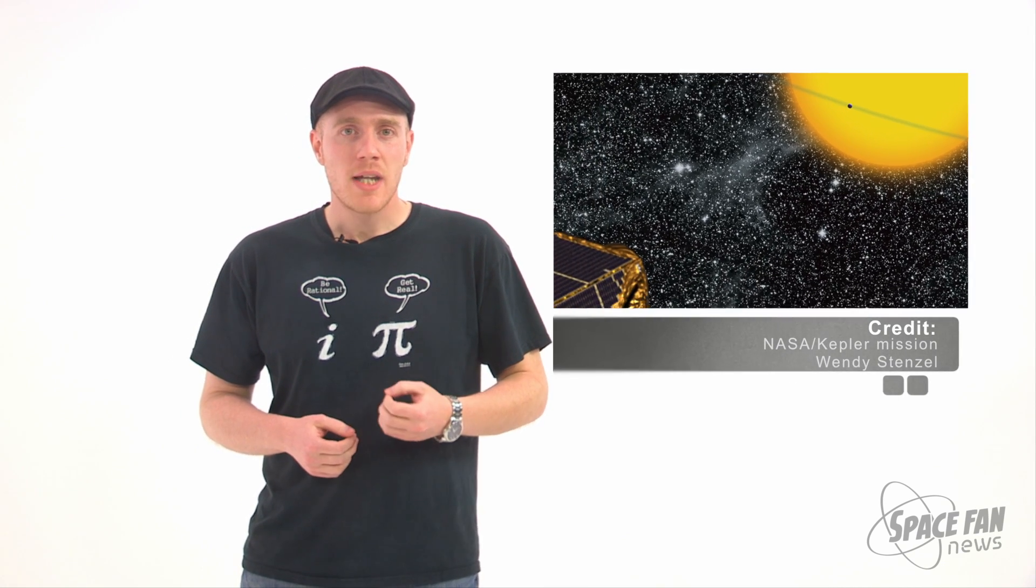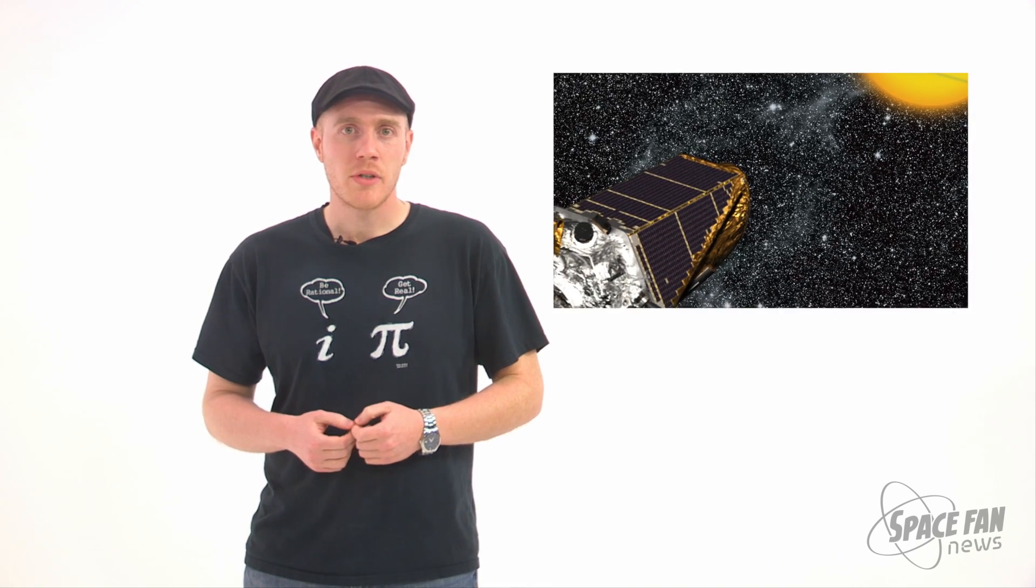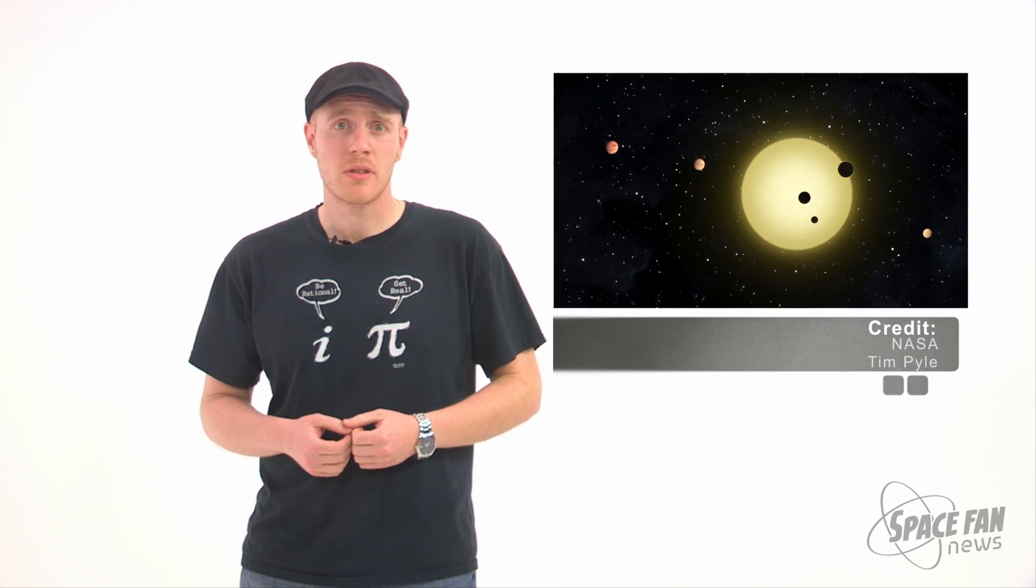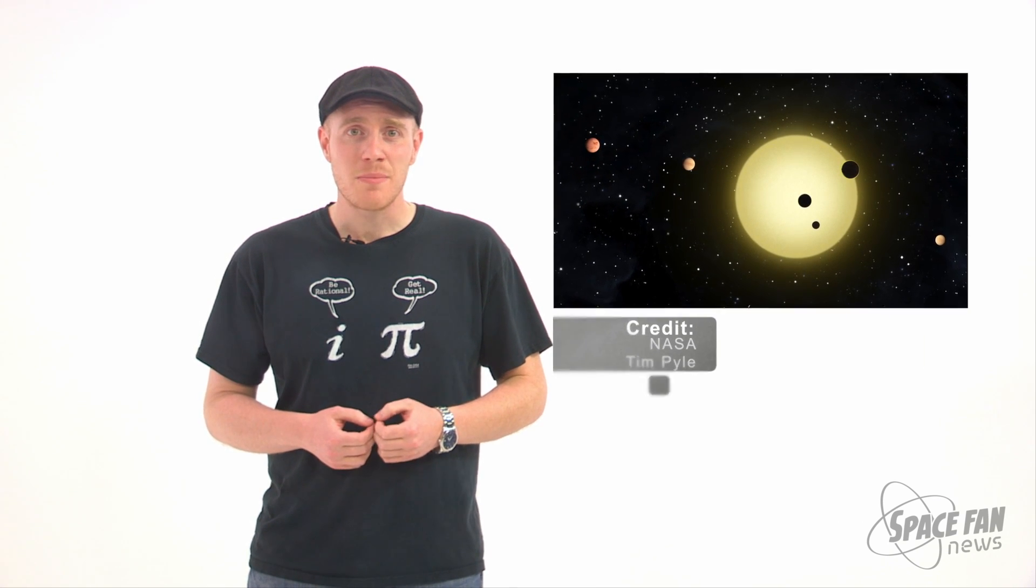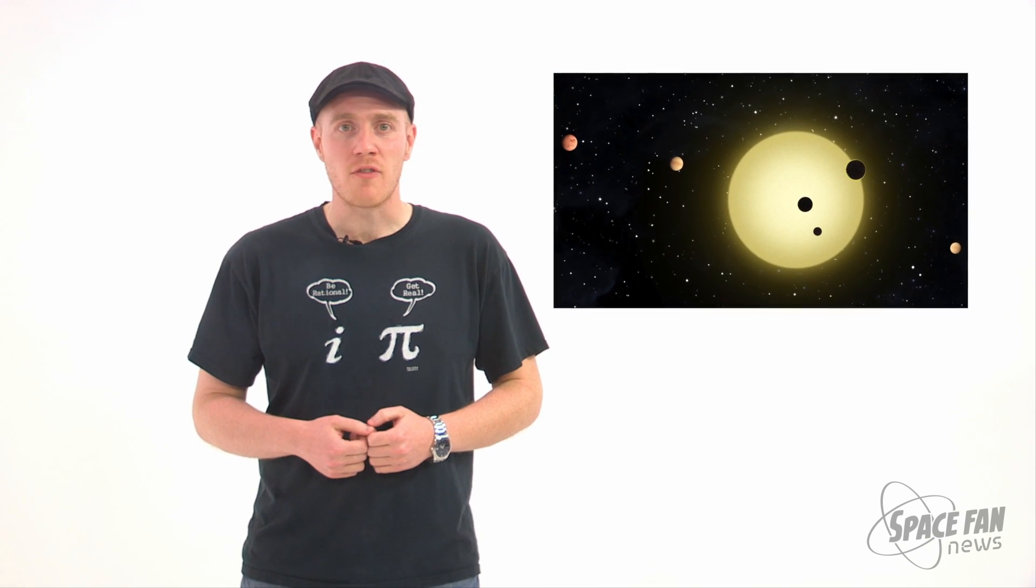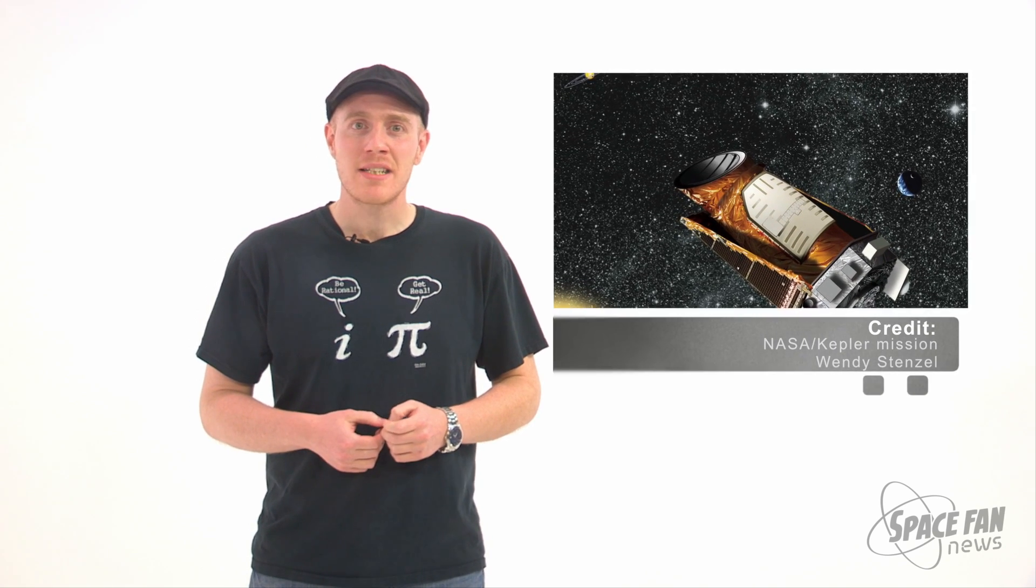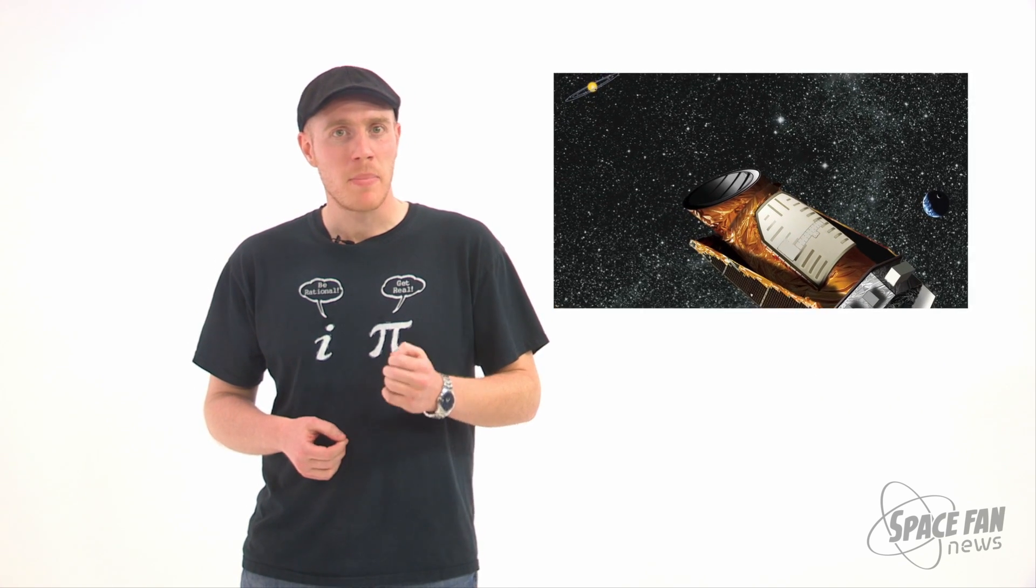This new evidence sets up potential for successors of Kepler to directly image these Earth-sized planets orbiting in habitable zones. And with one of these candidates being a mere 12 light-years away from our solar system, imagining humanity becoming a multi-stellar species becomes just a bit easier.